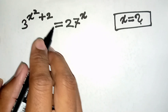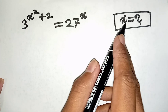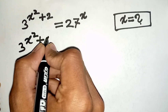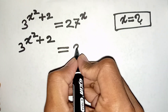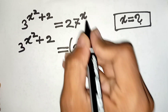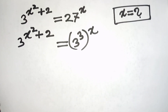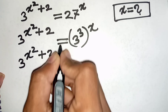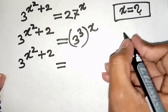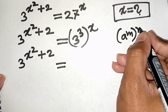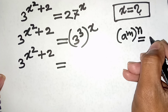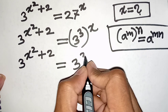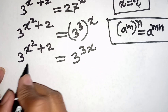How to solve 3 power x squared plus 2 is equal to 27 power x — find the value of x. We have 3^(x²+2) = 27, and 27 is the same as 3 power 3. So we can write 3^(x²+2) = 3^3 power x. Applying the formula a^m power n = a^(mn), we get 3^(x²+2) = 3^(3x).